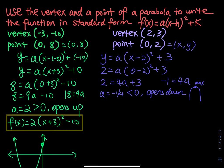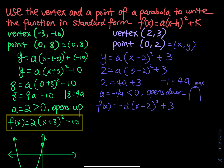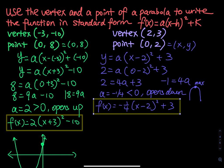What about the standard form? The standard form is f of x equals to negative 1 over 4 times x minus h square plus 3. This is the standard form that we are looking for.